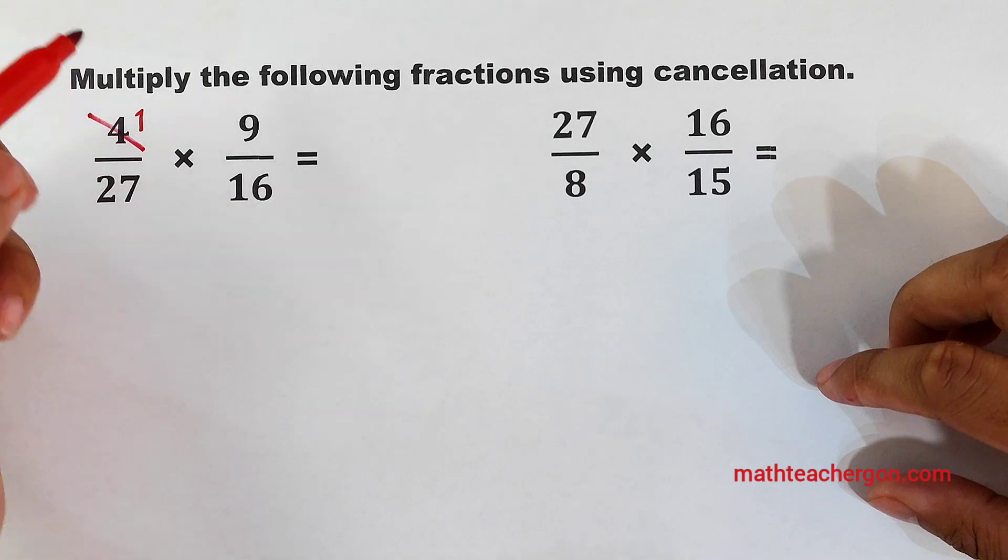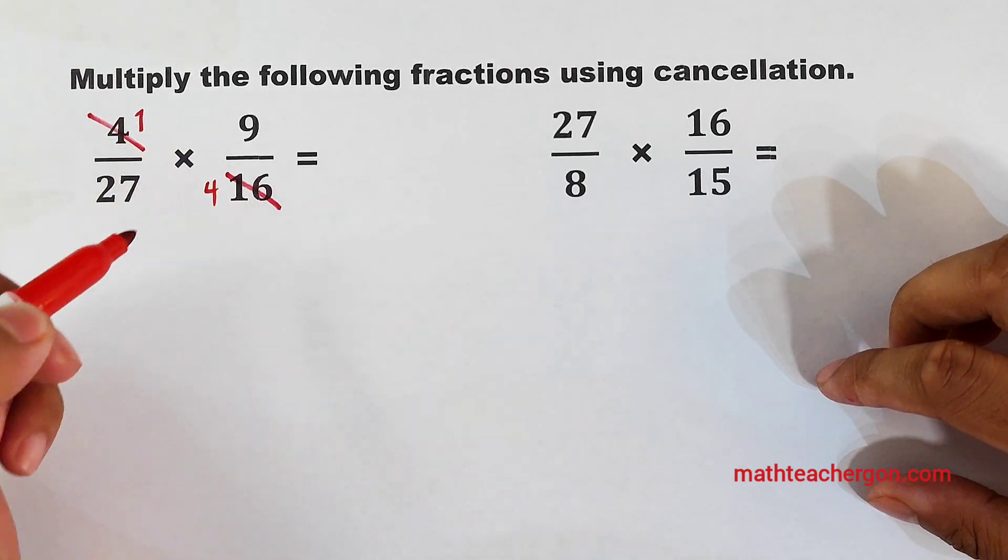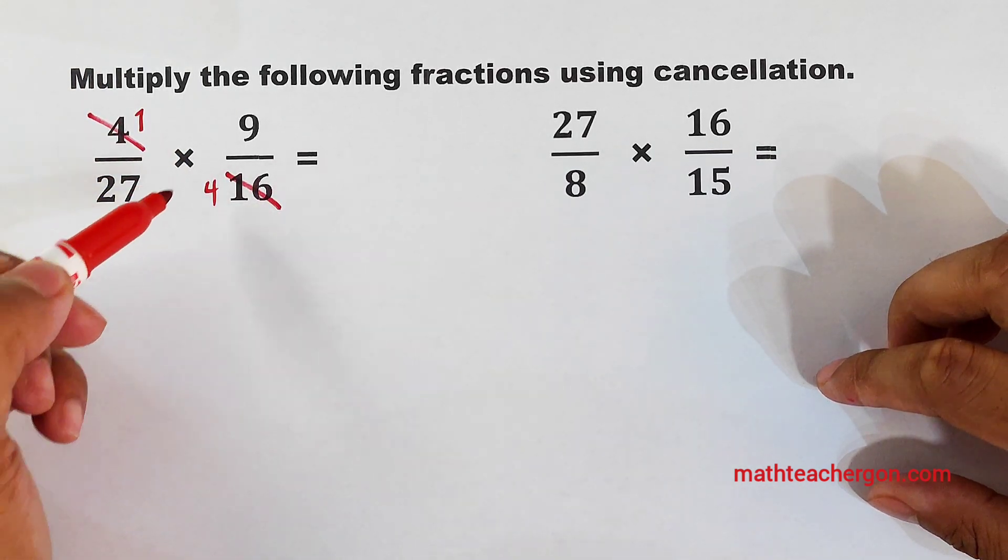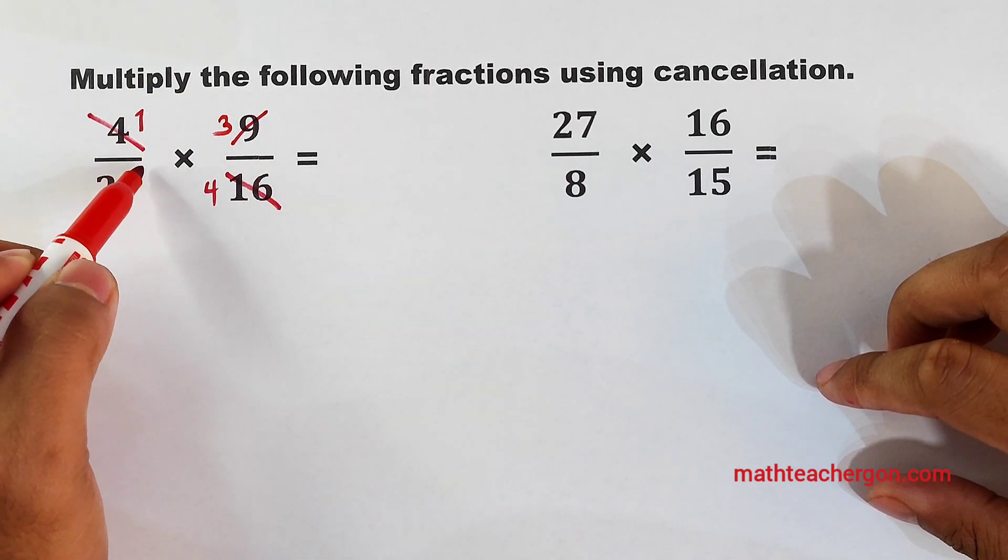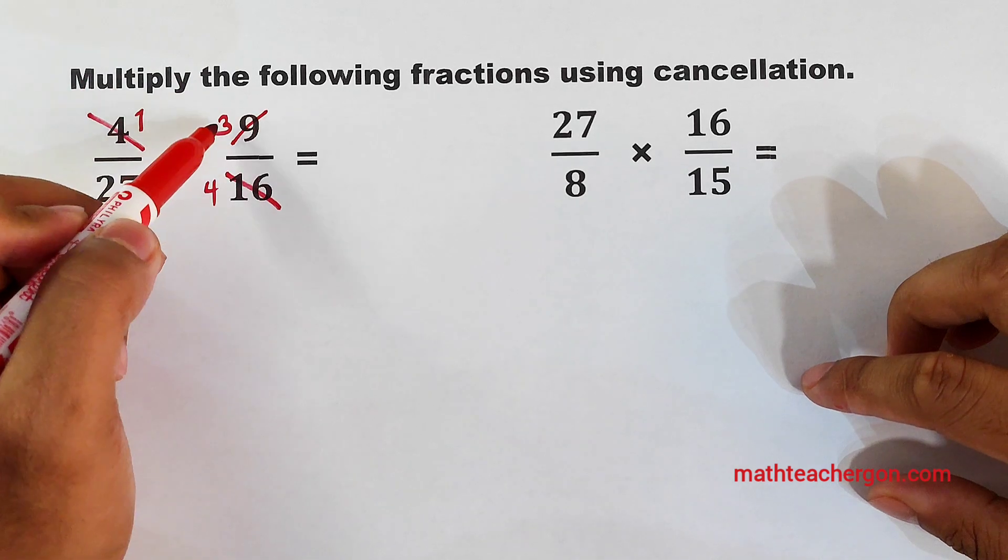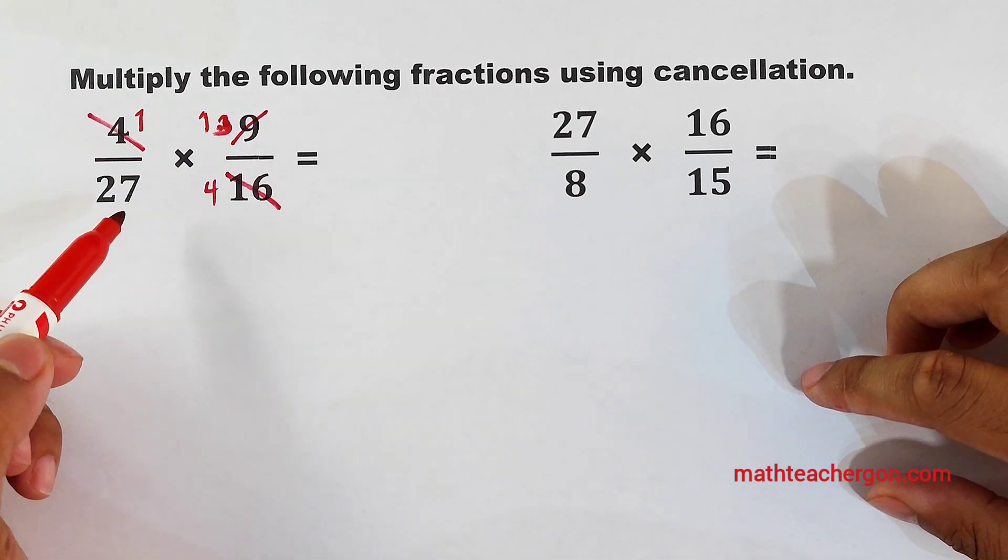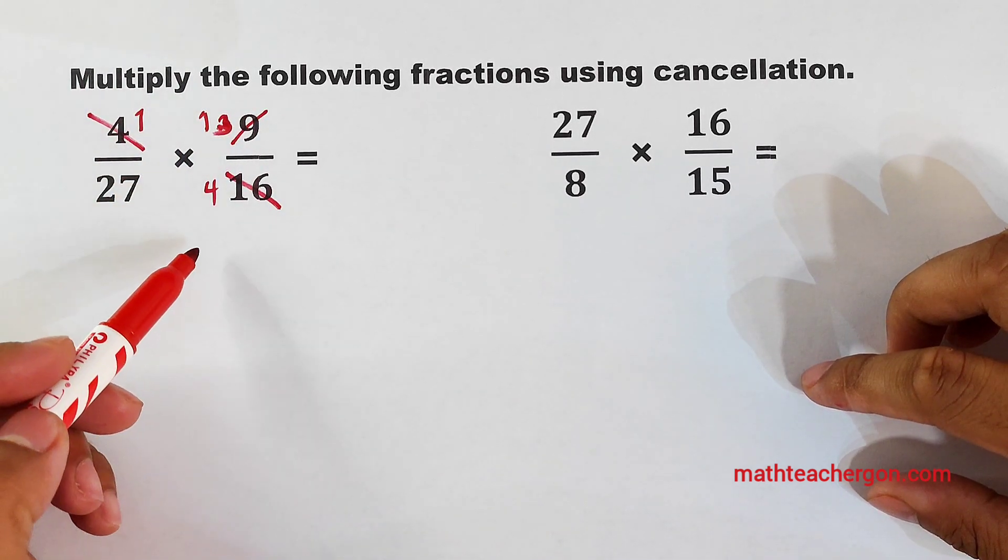It will become 1. And as for 16, it will become 4. For 9 and 27, this will become 3. This will become... No. This will become 1. Sorry for that. Because their greatest common factor is 9.